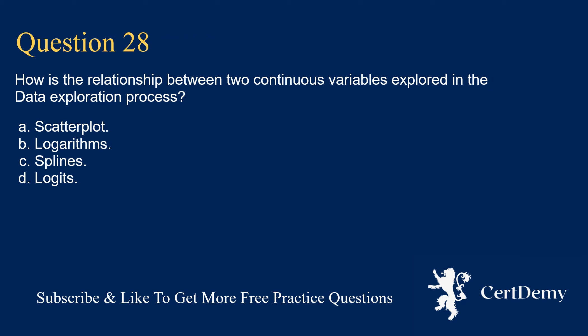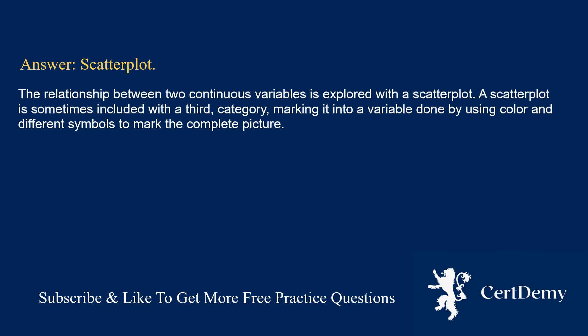Question 28. How is the relationship between two continuous variables explored in the data exploration process? Options: scatterplot; logarithms; splines; logits. The answer is: scatterplot. The relationship between two continuous variables is explored with a scatterplot, which is sometimes included with a third categorical variable marked using color and different symbols.